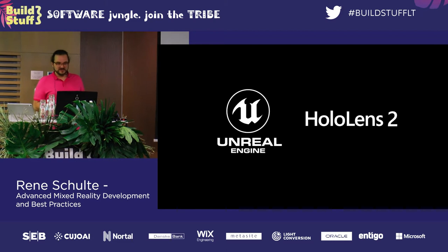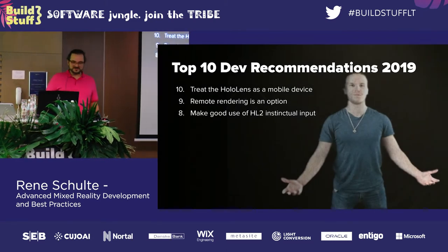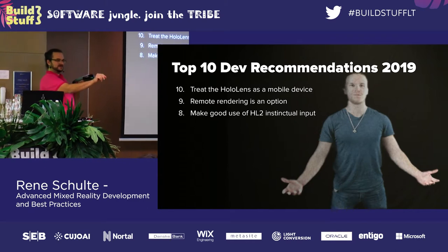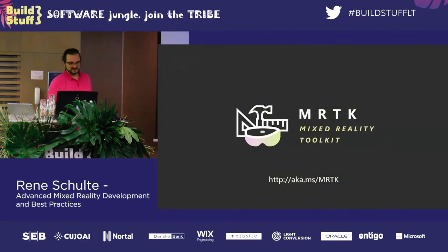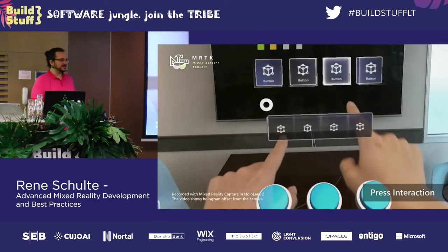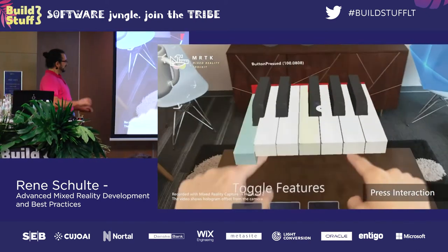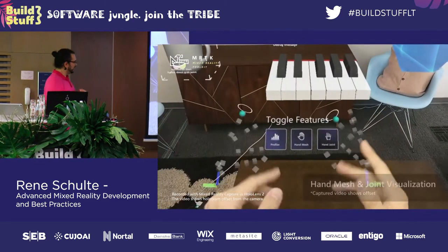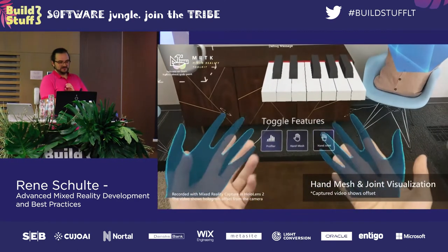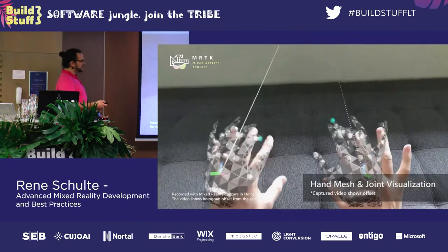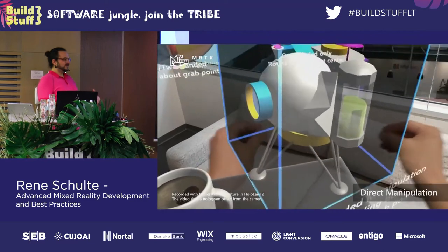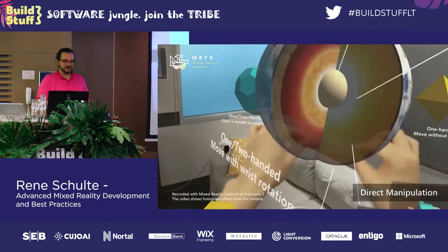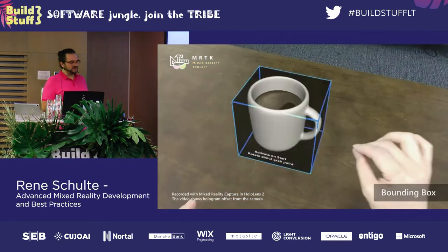Number nine: make good use of HoloLens 2's instinctual inputs. HoloLens 1 only supported an air tap gesture; HoloLens 2 has full articulated hand tracking for both hands. You can get raw finger tracking data, but you'll want to use the Mixed Reality Toolkit — an open source project providing an abstraction layer for articulated hand tracking, pre-built 3D controls, and cross-platform support. Make good use of the MRTK and its instinctual input support.